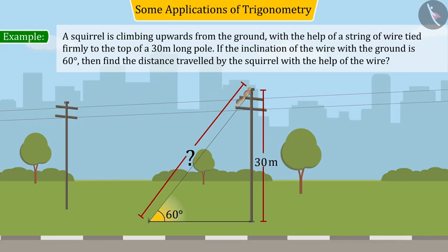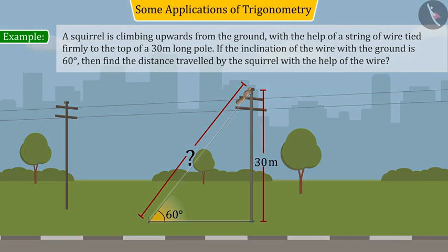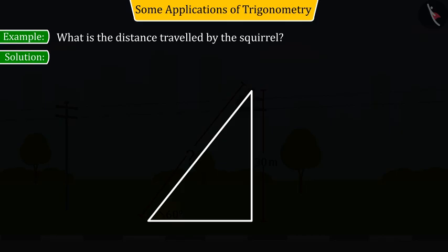Let us first construct the figure according to the given information. Suppose XO is a pole whose height is 30 meters, where a wire is tied to the top X of the pole, which is connected with point Y on the ground.